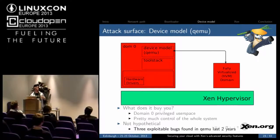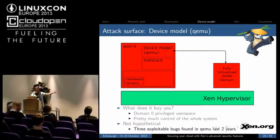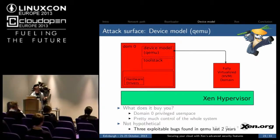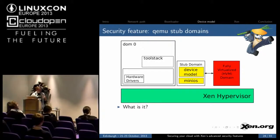This is not a problem unique to Xen — anyone using QEMU, like KVM, would be susceptible to these bugs, and anyone doing emulation like Hyper-V or VMware may have the same kind of risks. But the solution is unique to Xen. There's a security feature called QEMU stub domains.